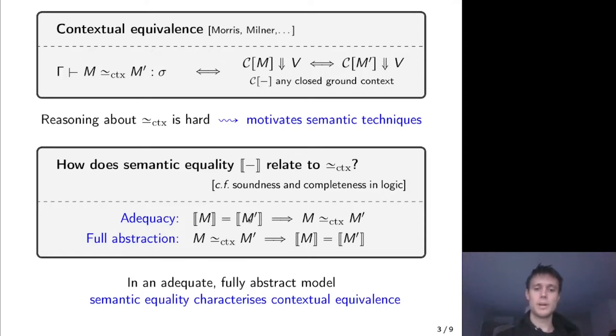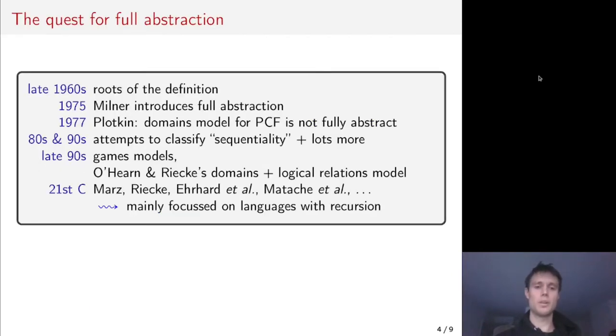Typically, adequacy can be proven by some kind of logical relations argument, but full abstraction proves to be much more difficult. This is borne out by the long history of research into full abstraction, of which the classic paper is Plotkin's, where he shows that the domains model for PCF is not fully abstract, although it is if one adds a parallel-or construct.